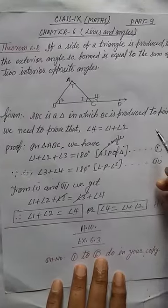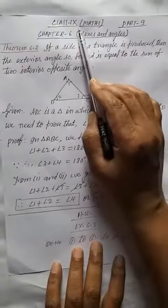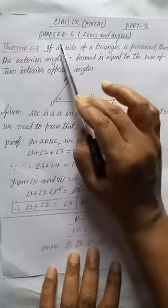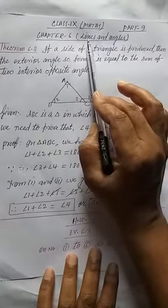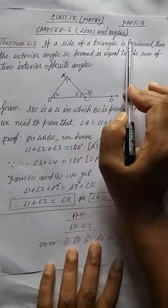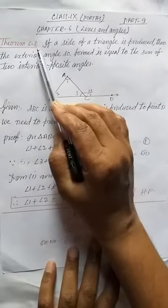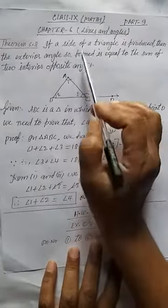Hello students, good morning to everyone. Class 9th, Subject Math, Chapter 6. The name of the chapter is Lines and Angles. Today our topic is Theorem number 6.8. This is the last theorem of this chapter.